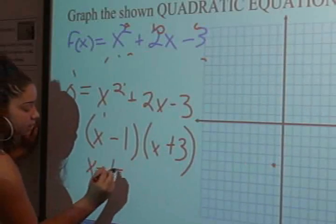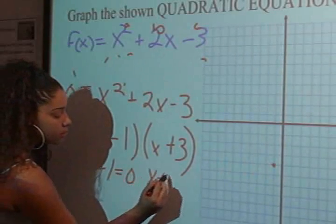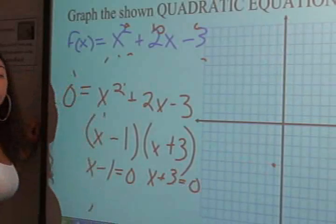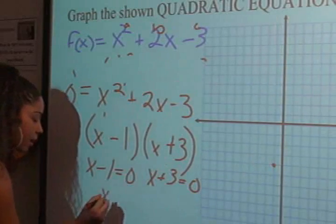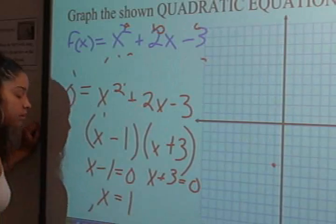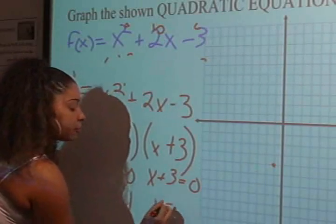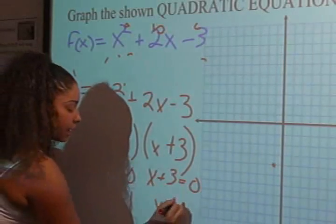And you should have done because we're going to set each of these equal to 0. We're going to solve for x. So, if you bring the 1 over, x should equal positive 1. And if you bring the 3 over to this side, x should equal negative 3.